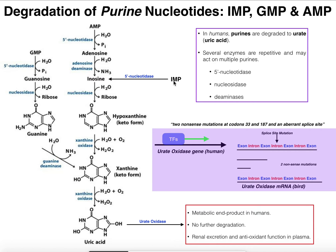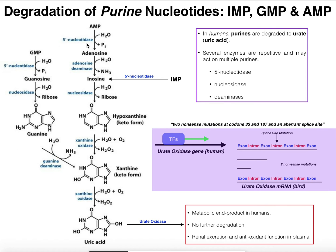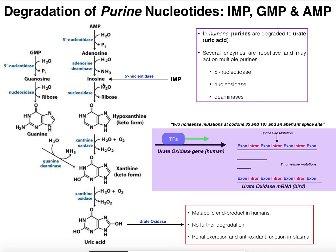IMP, which has a 5' phosphate, can also react with 5'-nucleotidase, which removes that 5' phosphate. If you remove the 5' phosphate from IMP, you're left with the ribose ring and the base, which is inosine. Inosine will then react with a nucleosidase, which hydrolyzes off the ribose ring and leaves us with the free base called hypoxanthine.